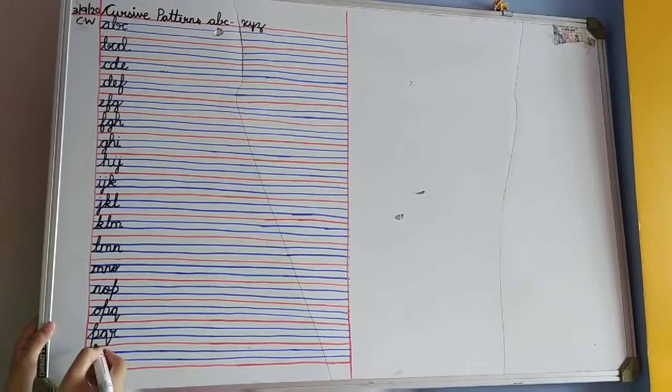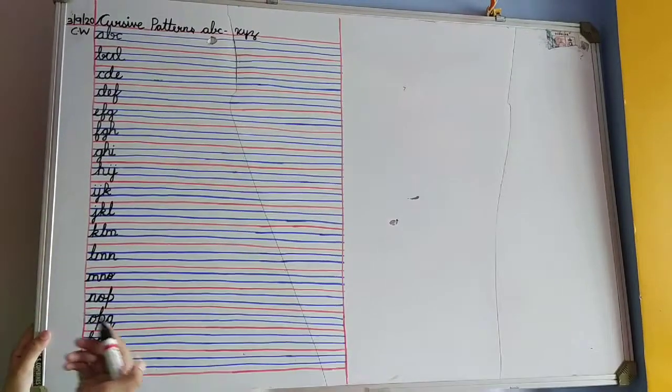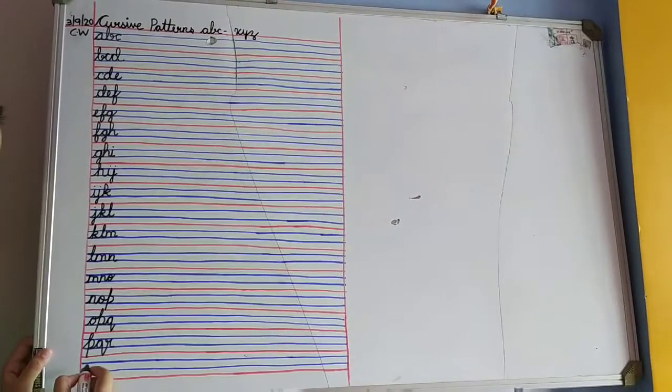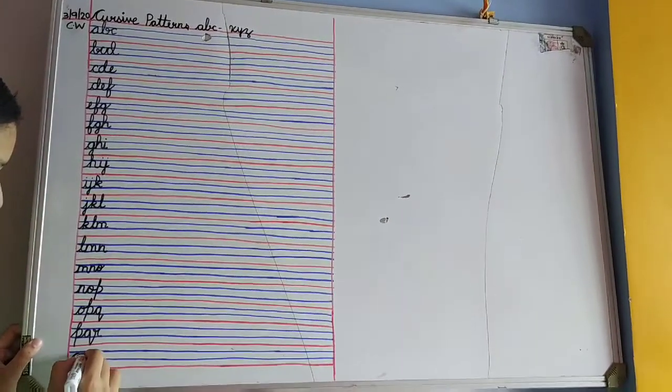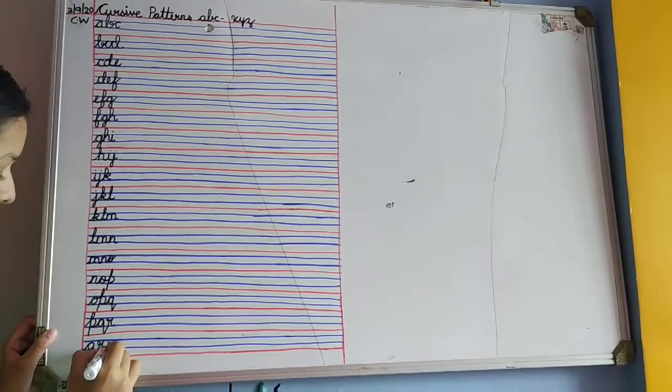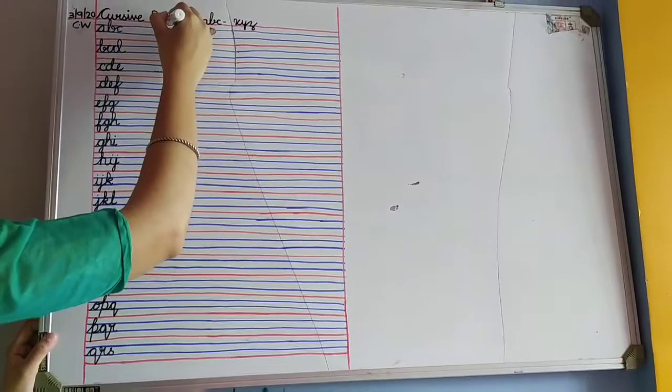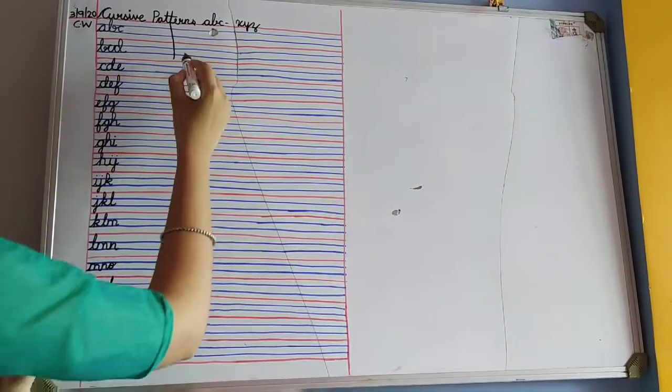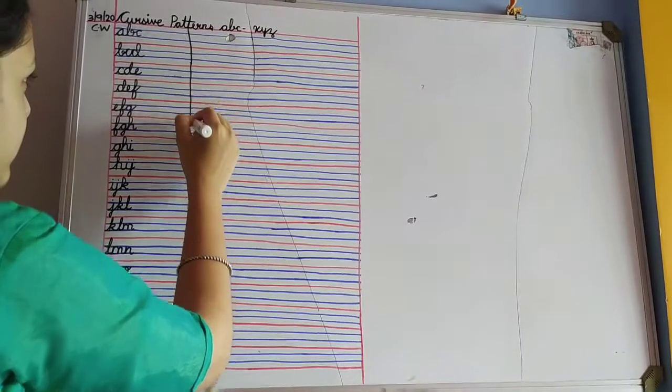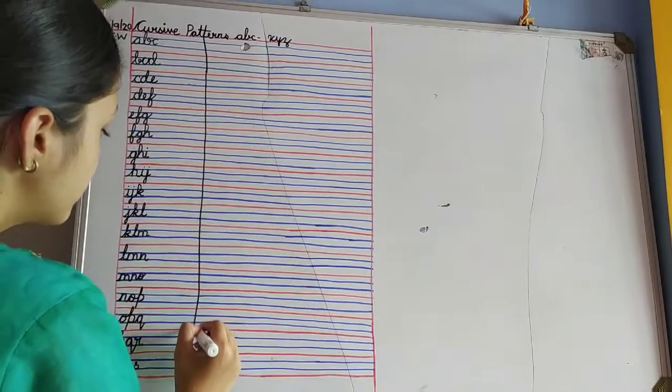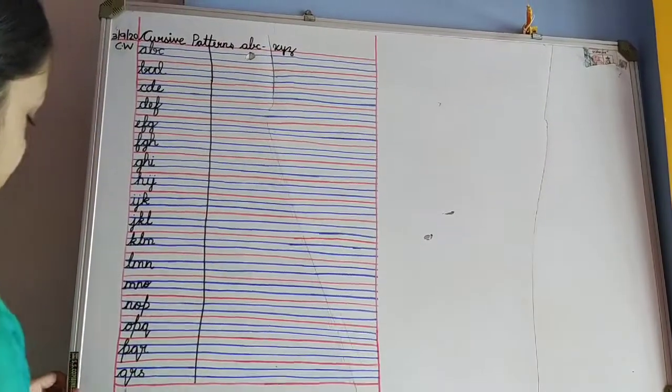And when you write, please keep saying it orally so that it goes in your mind. Q-R-S. Now, let's draw a line. You will use scale to draw a line. Okay, next.